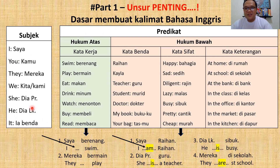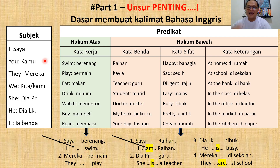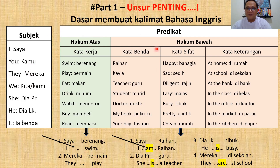Kemudian unsur kedua: predikat. Predikat itu apa? Mudahnya begini — tidak usah pusing-pusing belajar Bahasa Inggris. Pakai teori yang sangat mudah ini. Yaitu predikat: kata yang jatuh setelah subjek. Ada subjek, ada predikat. Predikat adalah kata kedua yang jatuh setelah subjek.